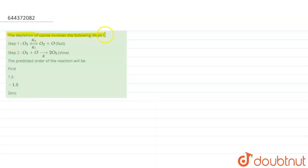The depletion of ozone involves the following steps. So you have two steps given: first step is fast reaction, second step is slow reaction. We have to predict the order of this reaction.